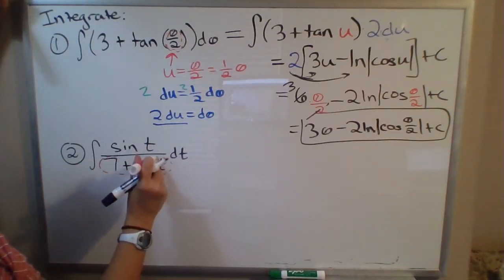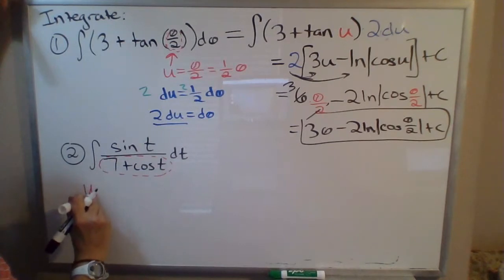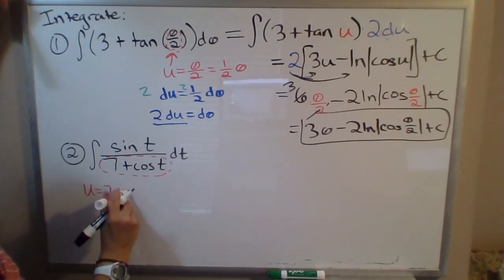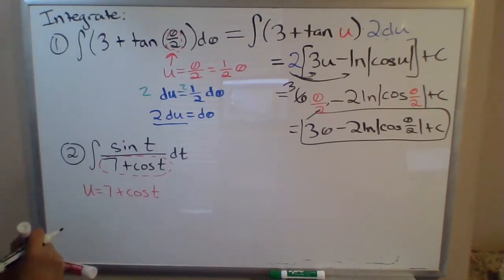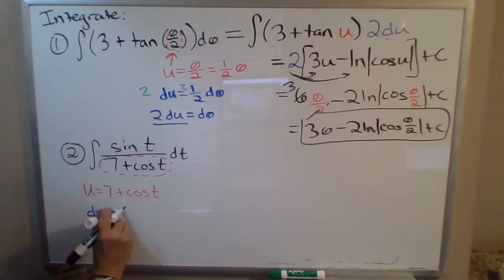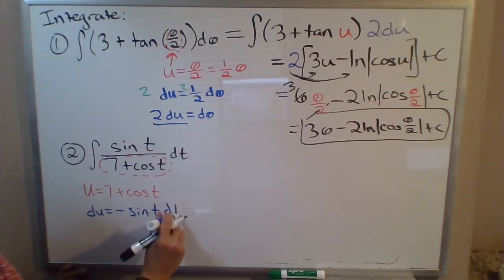If we let u equal this entire denominator, u equals 7 plus cosine of t. Then the derivative du would equal 0 plus derivative of cosine, which is negative sine of t times dt.